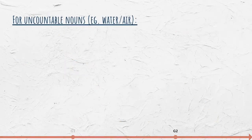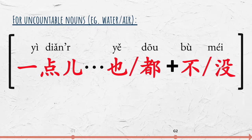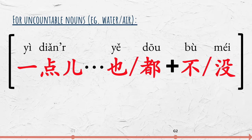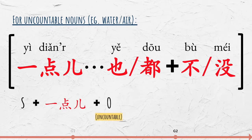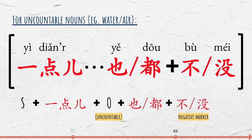In the case of non-countable nouns such as water or air, use 一点儿 instead of 一 plus the measure word. The structure is: Subject plus 一点儿 plus object plus 也 or 都 plus the negative marker 不 or 没 plus the verb phrase.